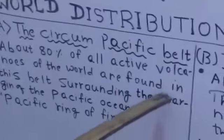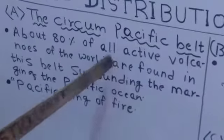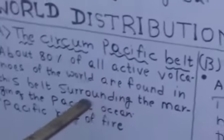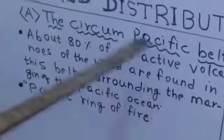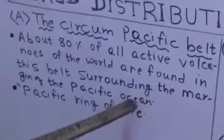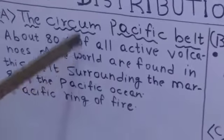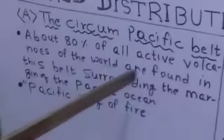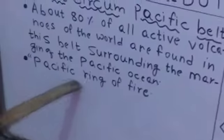This circum-pacific belt is situated around the Pacific Ocean. Here are two plates: the Pacific Plate and the North American and South American plates, then the Eurasian Plate and the Indo-Australian Plate. These volcanoes are associated with the margins of these plates. So 80% of all active volcanoes are found in this belt — for example, the Pacific Ring of Fire.